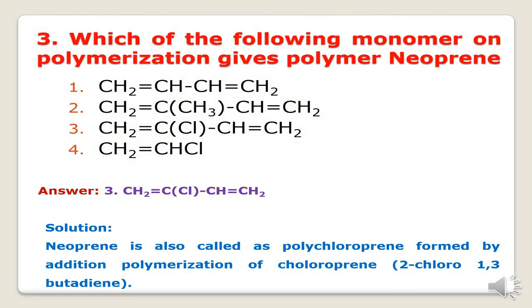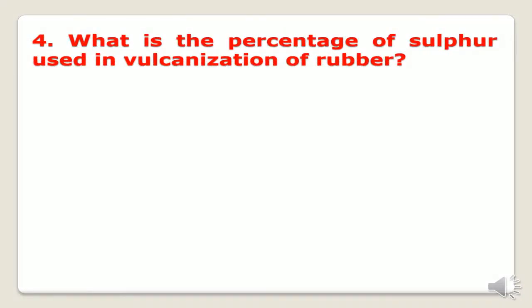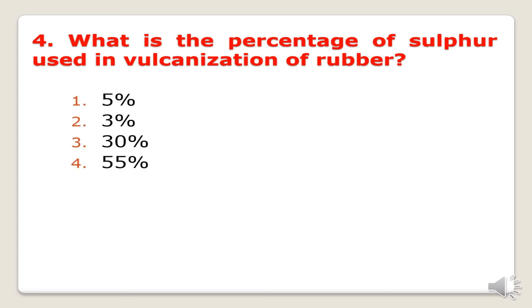Last question: what is the percentage of sulfur used in vulcanization of rubber? Vulcanization is the process of adding sulfur to rubber to increase its elastic behavior. The options are 5%, 3%, 30%, and 55%. As sulfur content increases, elasticity increases, but excess sulfur makes the rubber very hard, known as ebonite. The correct percentage of sulfur in vulcanization is 5% for both natural and synthetic rubber. Thank you.